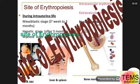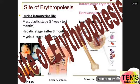Now we'll discuss the site of erythropoiesis. Erythropoiesis is the formation of erythrocytes, which means red blood cells. The site of erythropoiesis changes during three life stages: number one, in embryonic life; number two, in postnatal life; and number three, in adults.